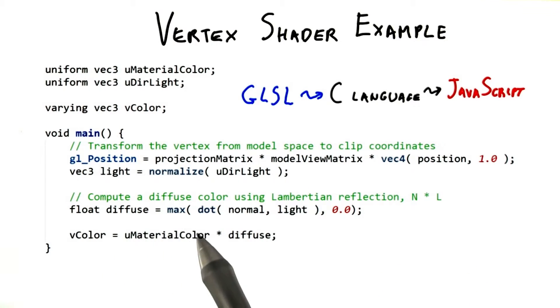The diffuse reflection model is computed on this next line. We take the dot product of the vertex normal in the light. We use the maximum function here to make sure the result is not negative. A negative number happens when the surface is pointing away from the light. We don't allow the light's contribution to be negative. That would be like light sucking energy from the surface.